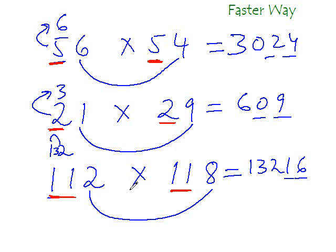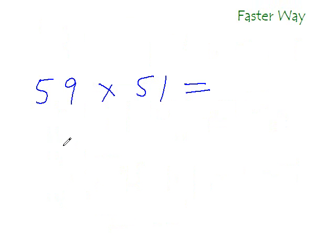Like 6 plus 4 is 10, 1 plus 9 is 10, 2 plus 8 is 10. When these two conditions are satisfied, this trick will work like magic - pure magic. Okay, so let's take one last example before we move on to the next trick, and you do it this time. Okay, so what is 59 times 51?